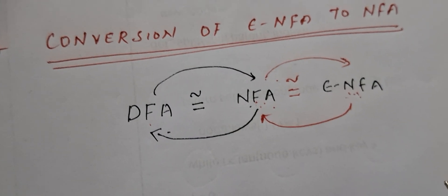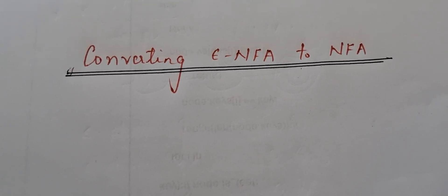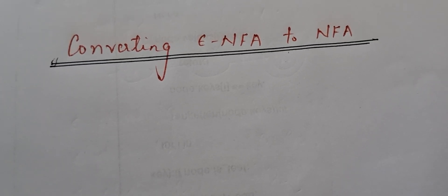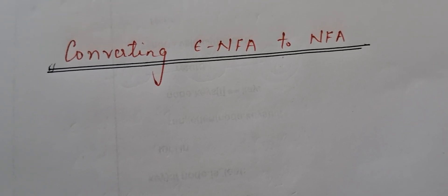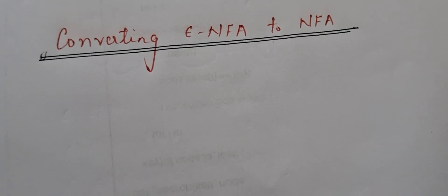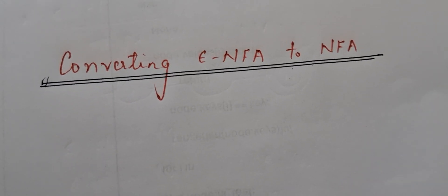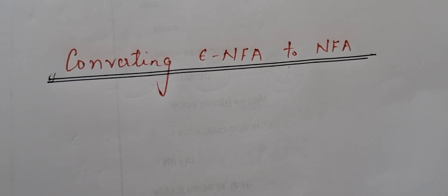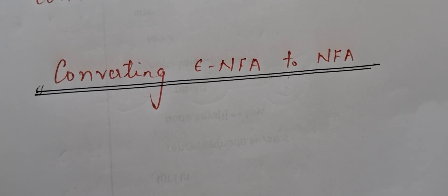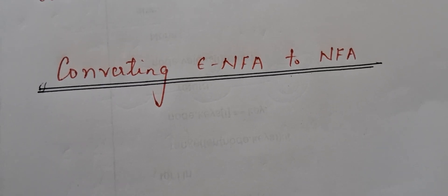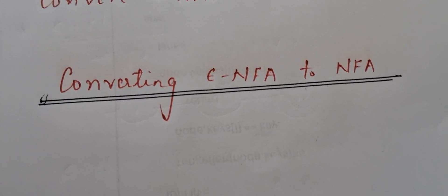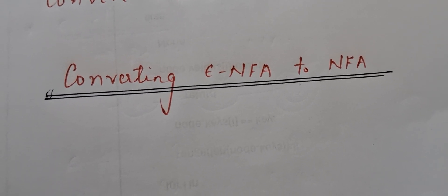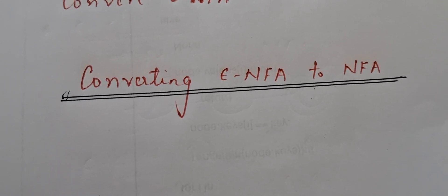To convert epsilon-NFA to NFA, we need to construct the state transition table for the NFA. In order to construct this table, we need a property called epsilon-closure. The epsilon-closure of a state is the state itself and the set of states reachable on epsilon moves. We use this epsilon-closure property to fill the entries in the state transition table.